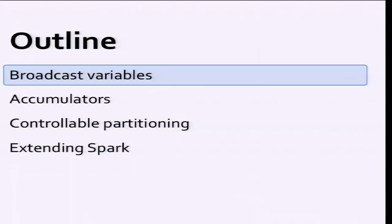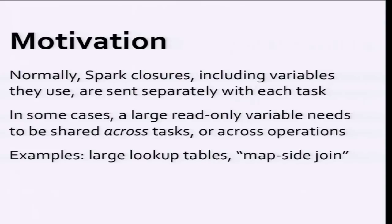Let's start with broadcast variables. This came out of us handing Spark over to folks implementing machine learning at the lab. Normally when you have a closure in Spark that you're shipping to the cluster — like the map I showed before — and you use variables inside it, we ship them to the cluster with the closure. But in some cases these variables are very large. For example, in machine learning algorithms you have a parameter vector that's n-dimensional, where n can easily be 100,000 or a million. So if these variables are shared across tasks or operations, we want to do something more efficient than sending a new copy with each task.